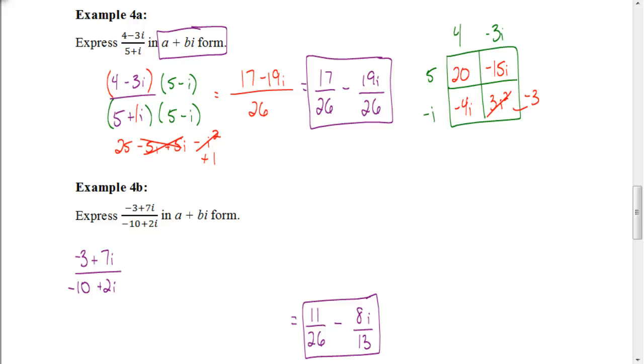Okay, so you should have gotten, as your answer, 11 over 26 minus 8i over 13. Now let's see how you get that answer. So we start out with our fraction. The first step is to multiply by the conjugate. Now the conjugate here is going to be negative 10 minus 2i.